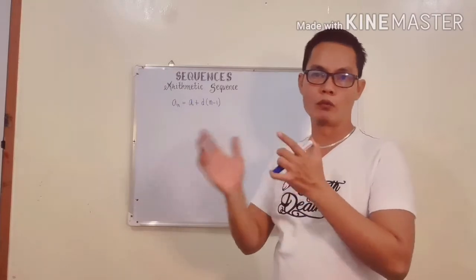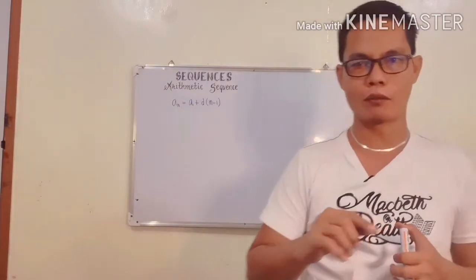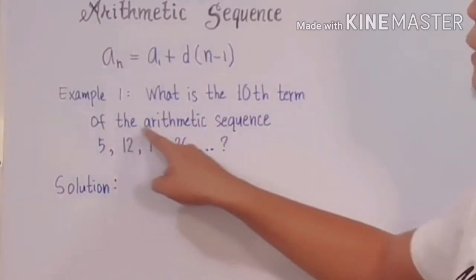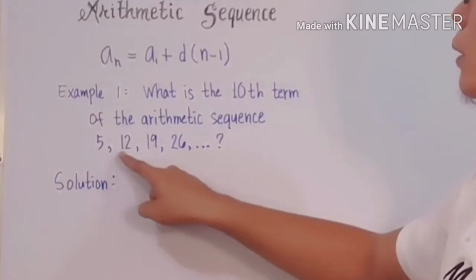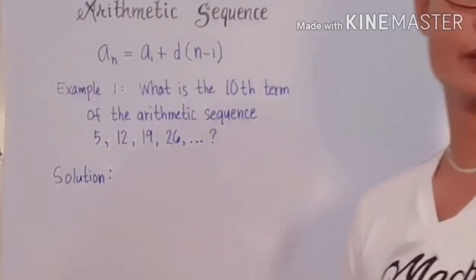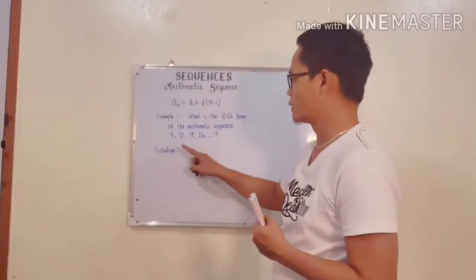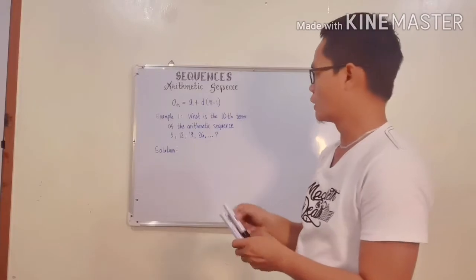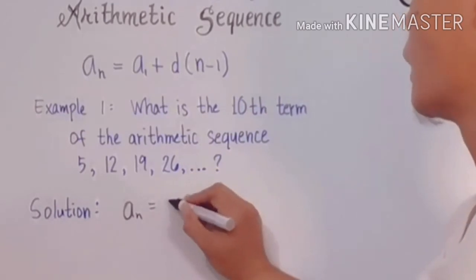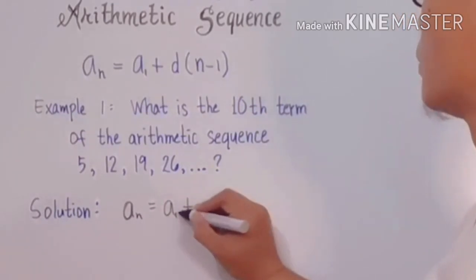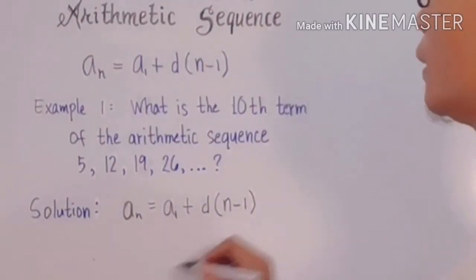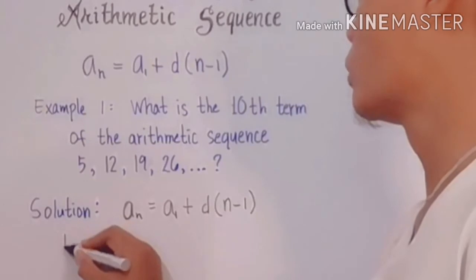Let's have an example. Example 1: What is the 10th term of the arithmetic sequence 5, 12, 19, 26, and so forth? Let us assume the value of this formula. We are going to use the formula for that one: aₙ = a₁ + the common difference d(n - 1).